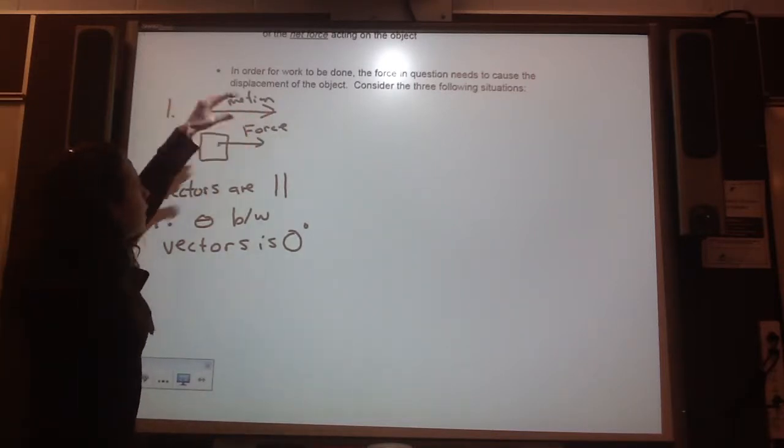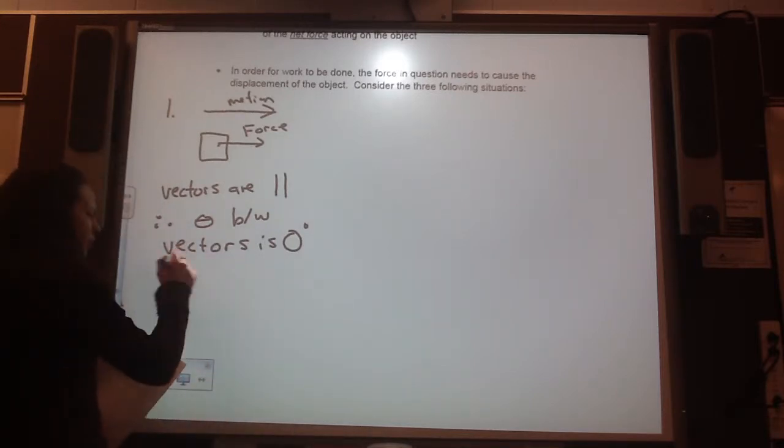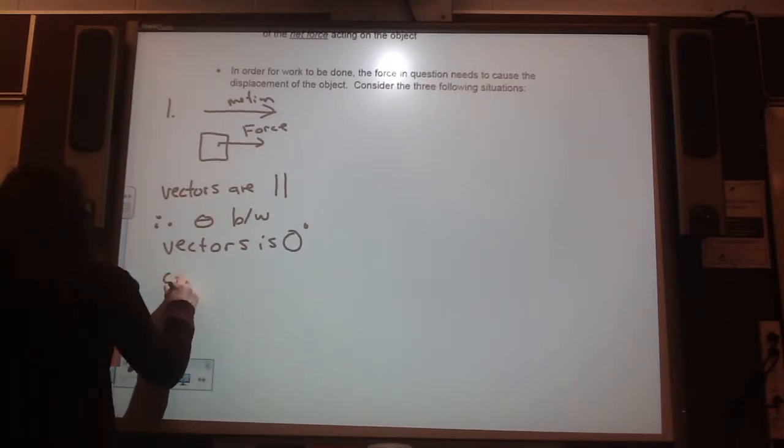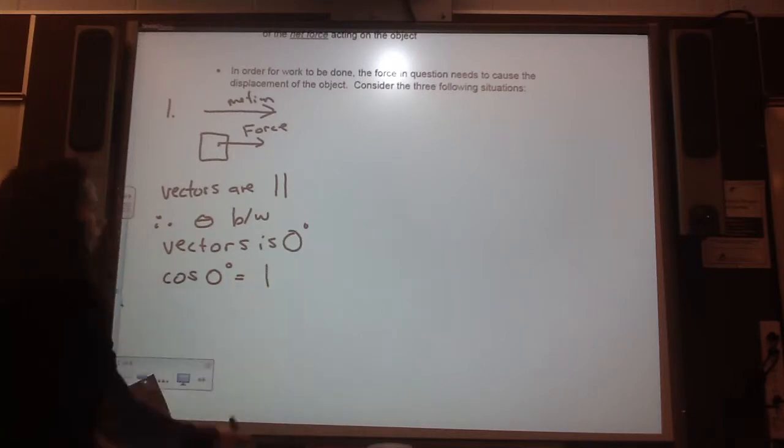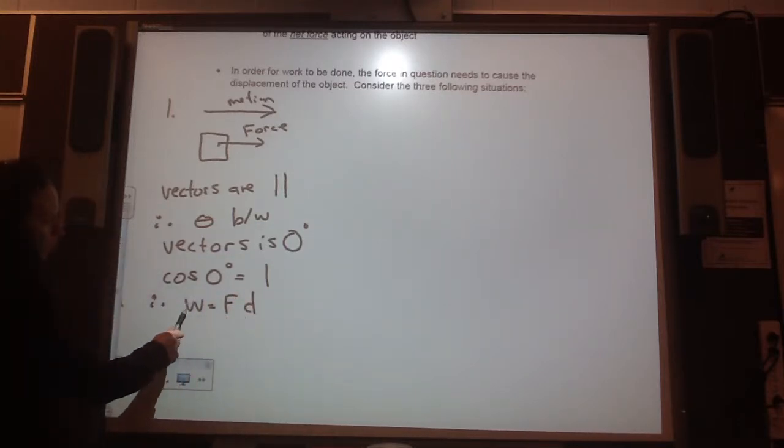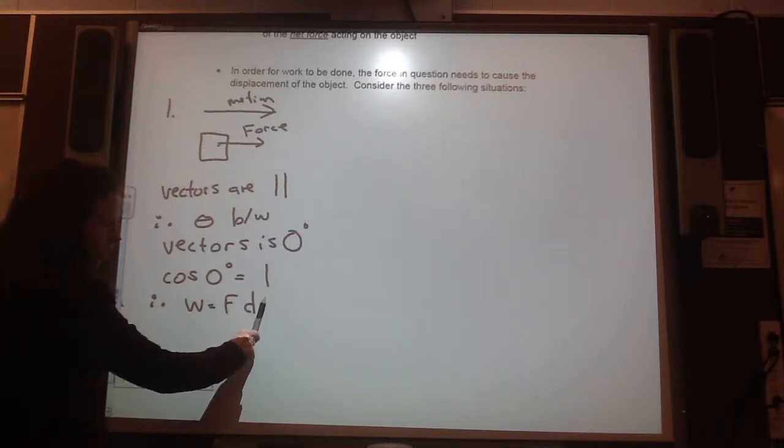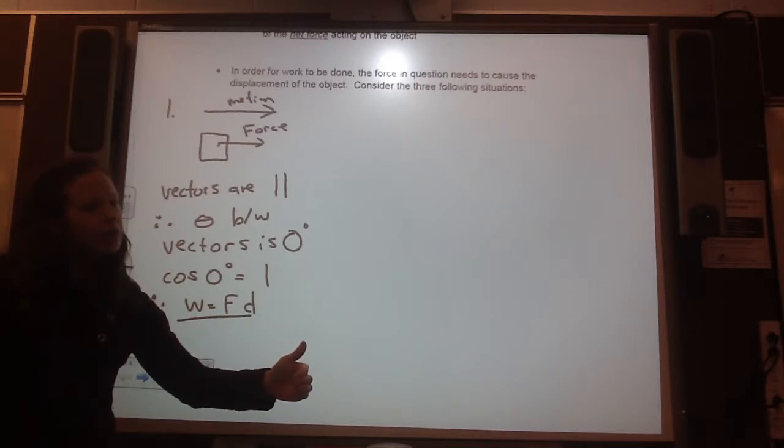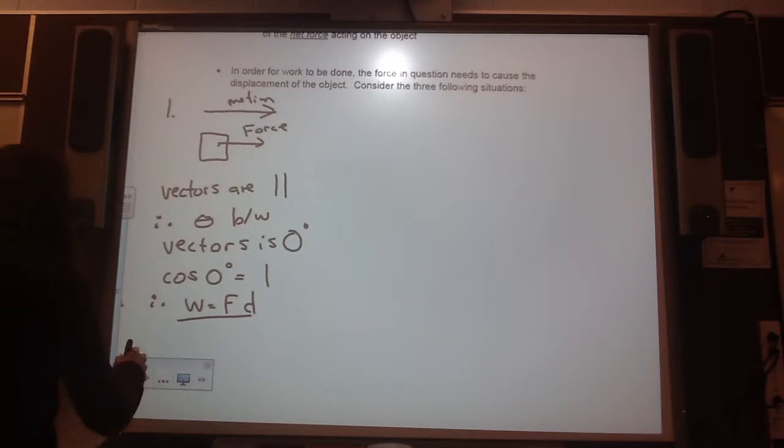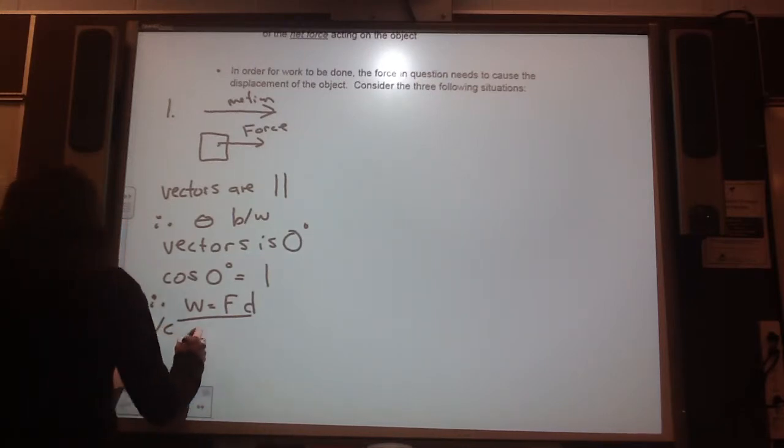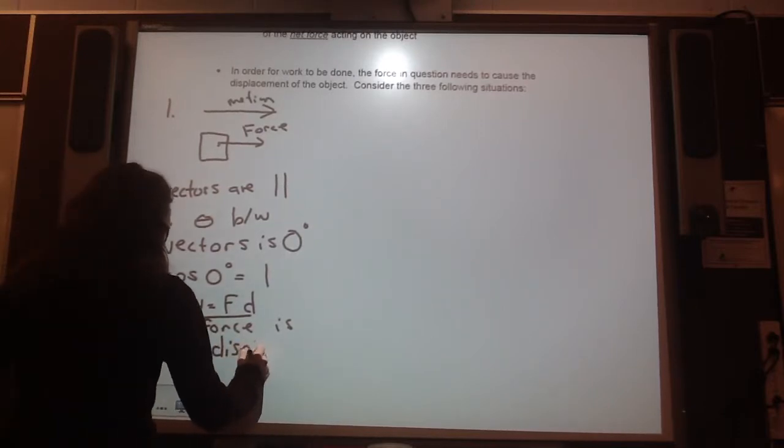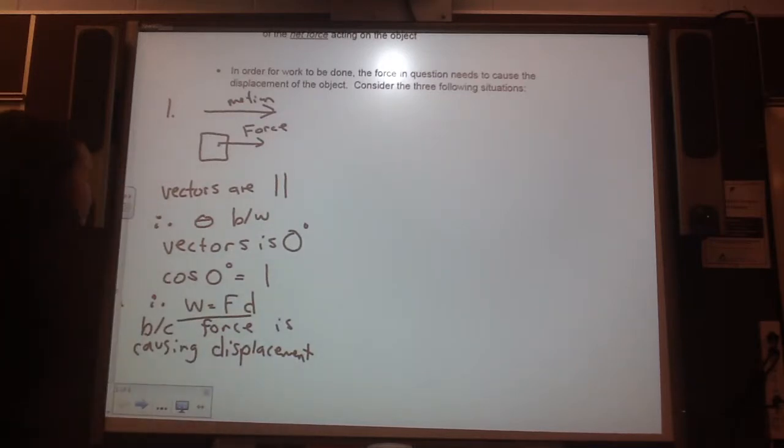Okay? So both of these are in the same direction. So it's like my force and my distance are like parallel. So there's no, it's just zero. So then, we would say, for this, cos of zero degrees is equal to one. But therefore, work equals force times distance, because work equals force times distance times cos theta. If cos theta is one, I can just eliminate that. So I have just work equals force times distance. So when the force is in the same direction of the motion, work equals force times distance. And we can say, because force is causing displacement.